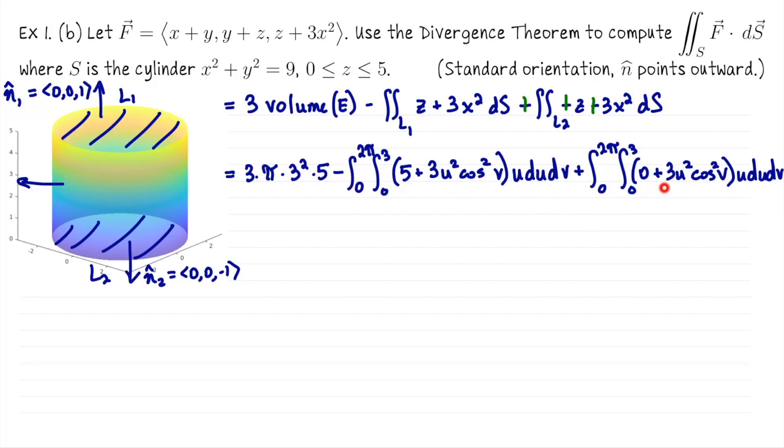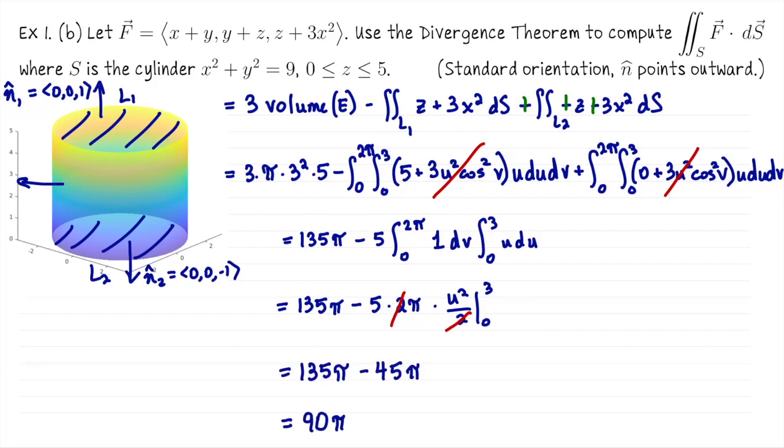When you look at these two double integrals, we get some really nice cancellation. This whole second part basically has gone away. We're left with 135π minus 5 times the integral from 0 to 2π of 1 dv times the integral from 0 to 3 of u du. Go ahead and anti-differentiate. We get 135π minus 5 × 2π × 9/2. Let's cancel those 2's. Overall we get 135π - 45π, which is 90π, which is what we already computed.